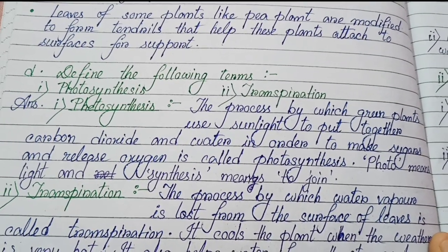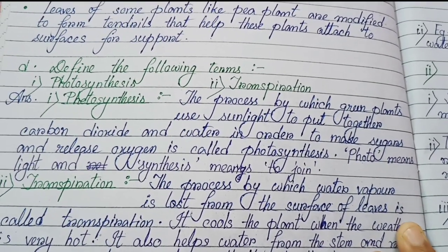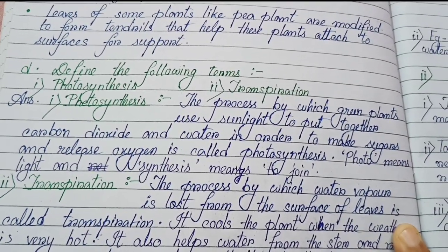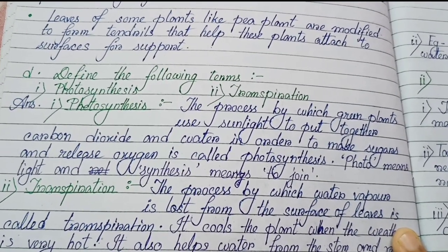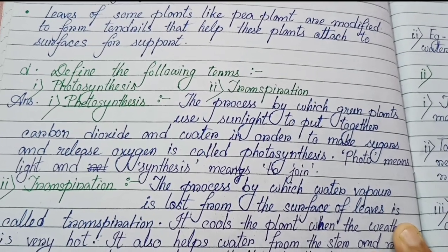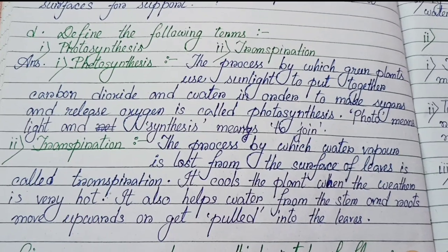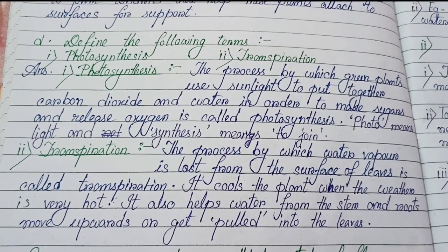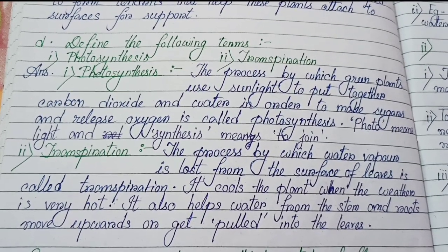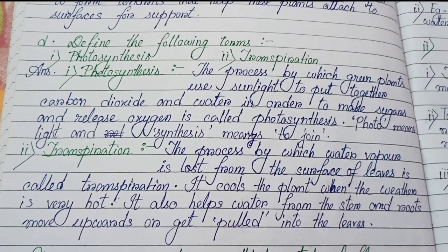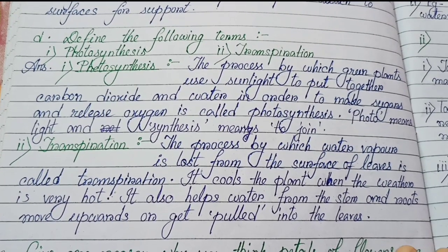Number (d): Define the following terms. Photosynthesis: the process by which green plants use sunlight to put together carbon dioxide and water in order to make sugars and release oxygen is called photosynthesis. 'Photo' means light and 'synthesis' means to join. Transpiration: the process by which water vapor is lost from the surface of the leaves is called transpiration. It cools the plant when the weather is very hot, and also helps water from the stem and roots move upwards into the leaves.